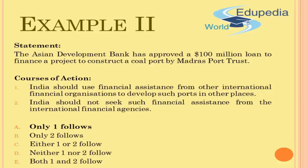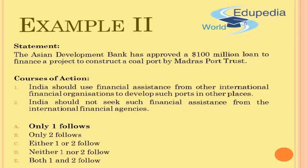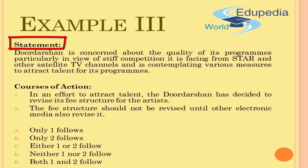In the remaining part of the video, we will look at various examples in which we will be selecting from among five options and logically evaluating alternative courses of action suggested. Let's take a look at example three. The statement says that Doordarshan is concerned about the quality of its programs, particularly in view of stiff competition it is facing from Star and other satellite TV channels, and is contemplating various measures to attract talent for its programs.